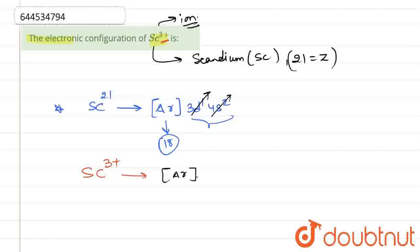...the remaining electronic configuration is AR. So it attains inert electronic configuration. We can say that SC3+ attains inert electronic configuration.